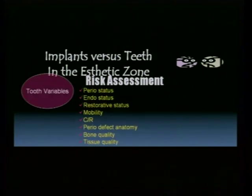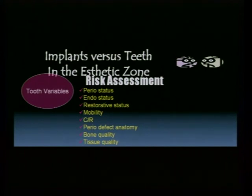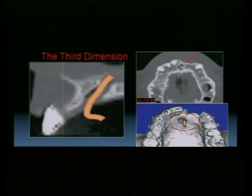Tooth variables include the periodontal status, the endodontic status, restorative status, mobility, crown-to-root ratio, perio defect anatomy, the bone quality, and the tissue quality — all of these must be considered.